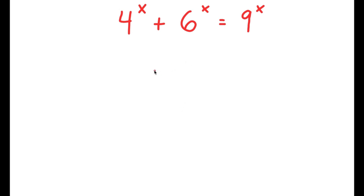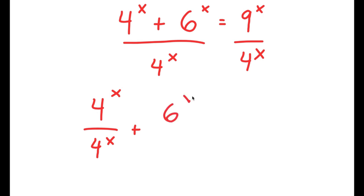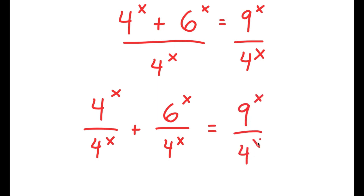So in this problem, I have 4 to the power of x plus 6 to the power of x is equal to 9 to the power of x. To solve this, I'm going to divide both sides by 4 to the power of x. So I get 4^x over 4^x plus 6^x over 4^x is equal to 9^x over 4^x.